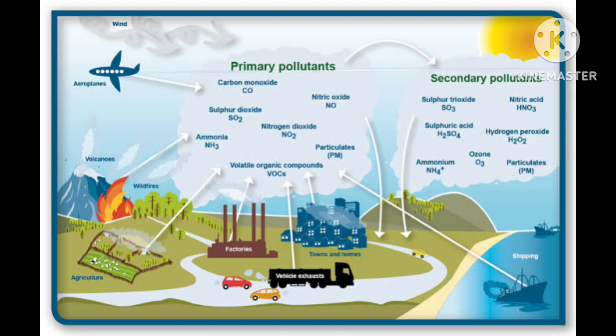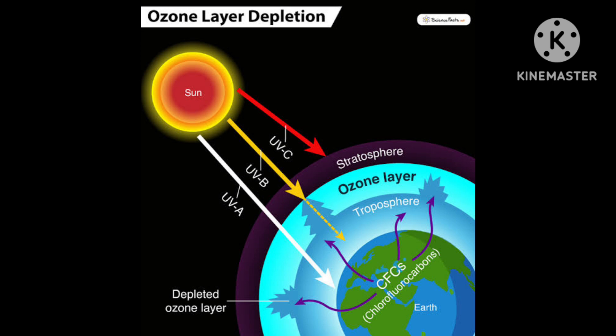Sunlight is essential for photochemical smog. Photochemical smog has a high concentration of oxidizing agents, and is therefore called oxidizing smog. Classical smog is called reducing smog because sulphur dioxide is a reducing agent. In photochemical smog, N₂O₅ is the oxidizing agent.